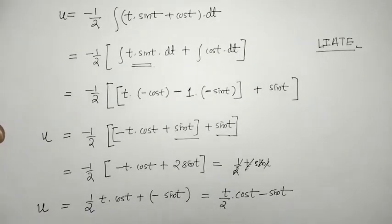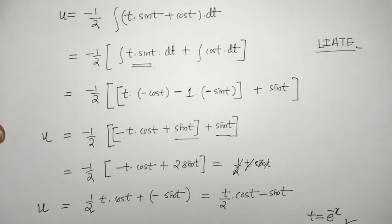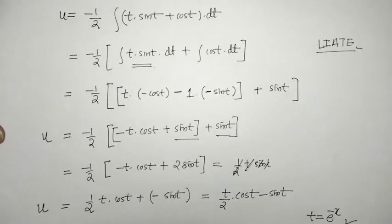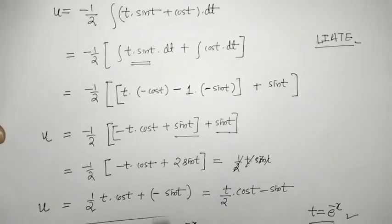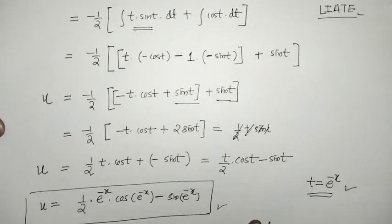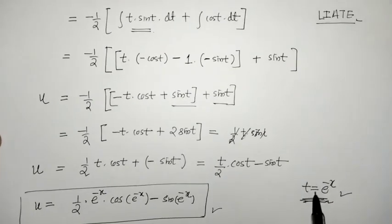After evaluating and simplifying the integral, we resubstitute t = e^(-x). So u = (1/2) * [e^(-x) * cos(e^(-x)) - sin(e^(-x))]. This is the value of u expressed back in terms of x.